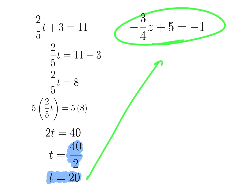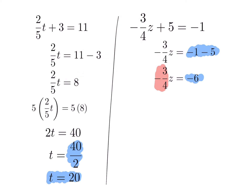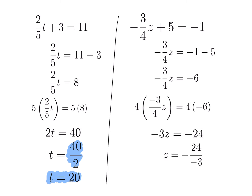For this next linear equation, subtract 5 across — on the right-hand side, negative 1 minus 5 is negative 6. To remove the negative 3 quarters, first eliminate the denominator by multiplying across by 4. The 4s cancel top and bottom, leaving z equals negative 24 over negative 3, which simplifies to z equals 8.